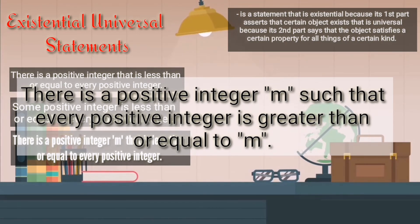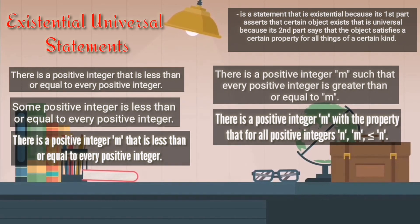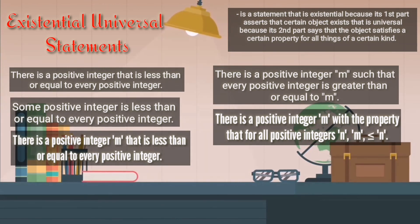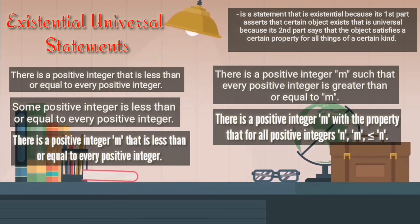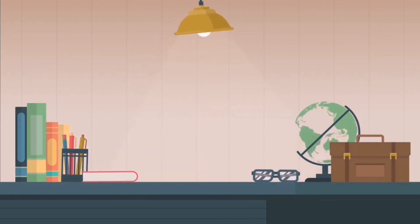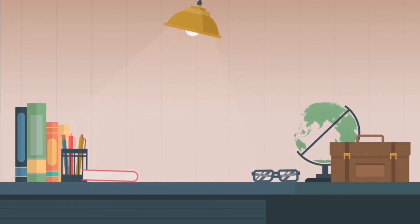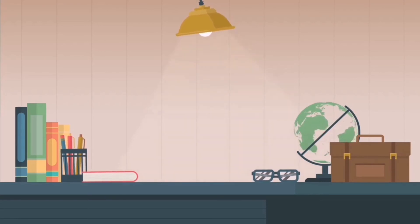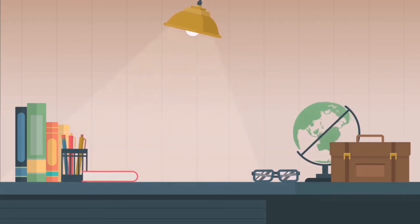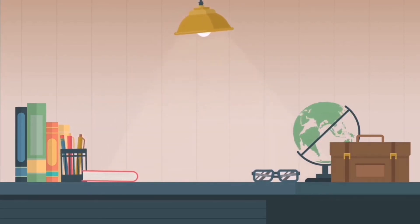Now let's focus on the last statement. What part is existential and what part is universal? The existential part is 'there is a positive integer M with a property,' while the universal part is 'for all positive integers N, M is less than or equal to N.' The key quantifiers are 'there is' and 'for all.'